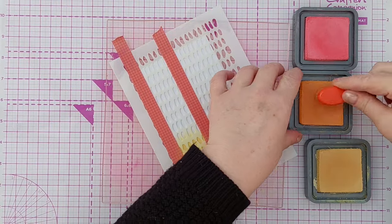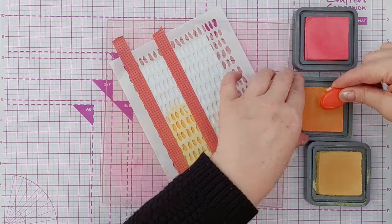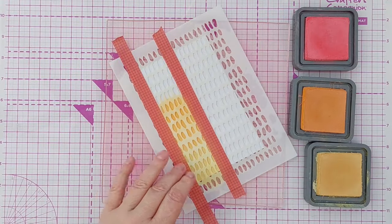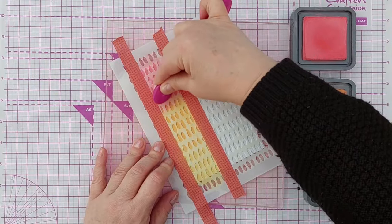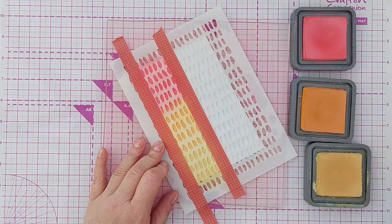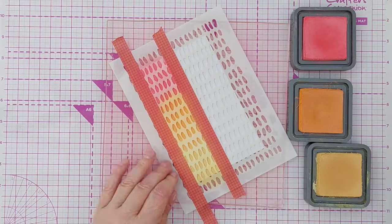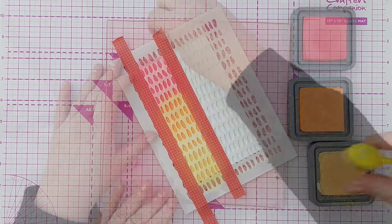I start at the bottom with scattered straw which is a pastel yellow, then dried marigold, and at the top I'm using worn lipstick. So this gives me a lovely warm ombre on the left hand side of my card.